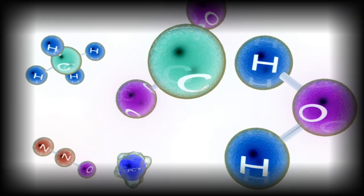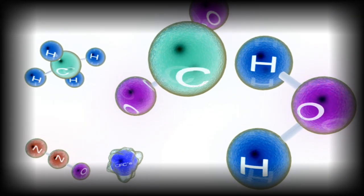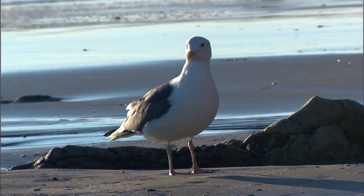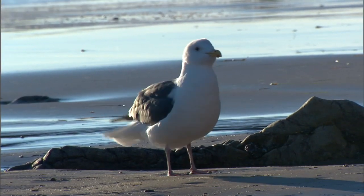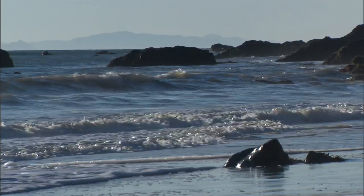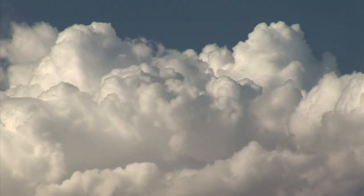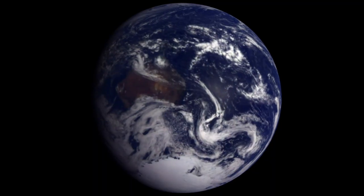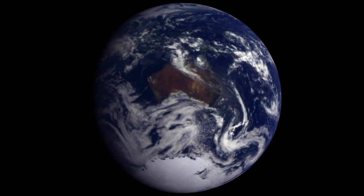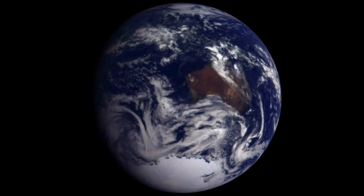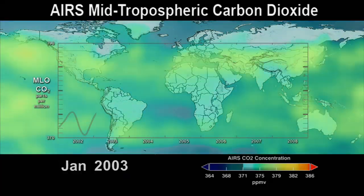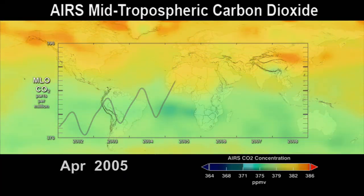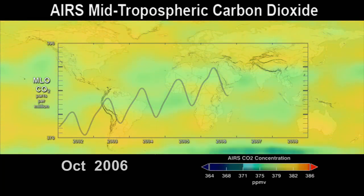Carbon is the basic building block of life and these unique atoms are found everywhere on Earth. Carbon makes up the Earth's plants and animals, and carbon is also stored in the ocean, the atmosphere, and the crust of the planet. A carbon atom could spend millions of years moving through the Earth in a complex cycle. Understanding the carbon cycle and how it is changing is key to understanding Earth's changing climate.